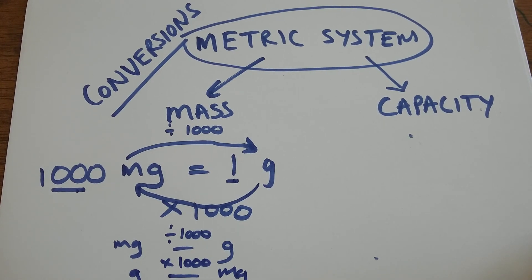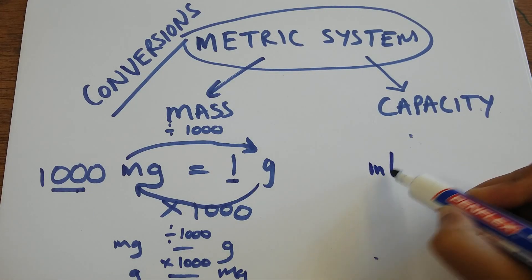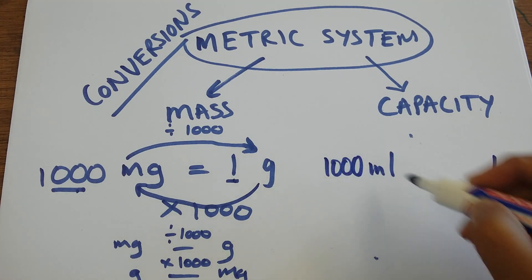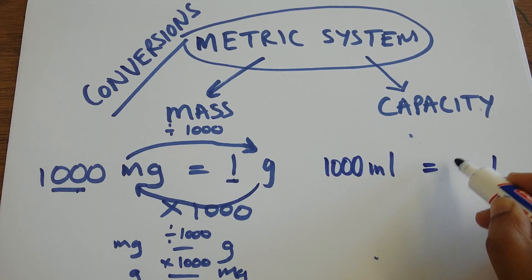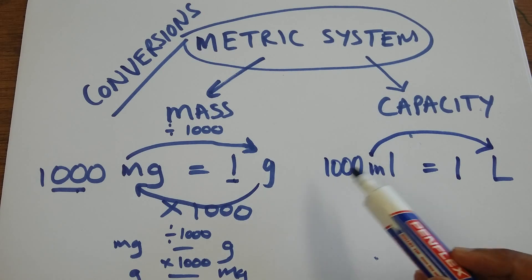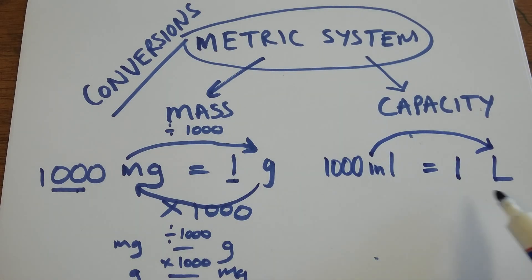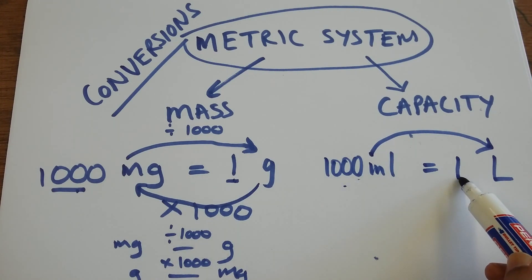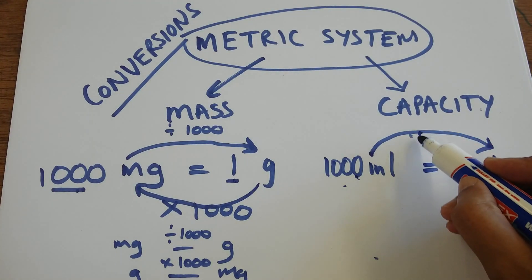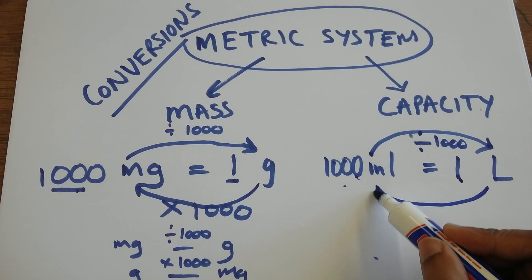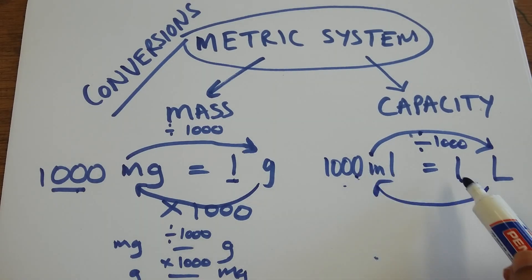Under capacity, we'll look at one example: milliliters and liters. We should know that 1,000 milliliters is equivalent to one liter. When I convert from milliliters into liters, I look at my 1,000 and my 1, and I ask: what did I do to 1,000 in order to get a 1? So 1,000 divided by 1,000 gives me 1.